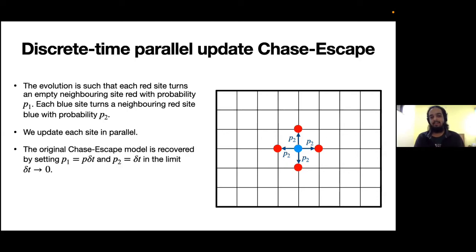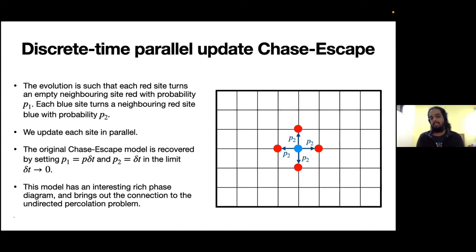We update all sites in parallel with infections along each bond independent. I just want to point out here that the original Chase-Escape model can be recovered in the continuous time limit where we set p1 to be p·Δt and p2 to Δt, and we take the limit of Δt going to zero.